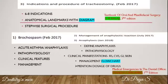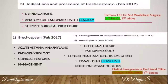All these questions are direct questions from textbooks. The first one is indications and procedure for tracheostomy — there are about six to eight indications. Before explaining the surgical procedure, anatomical landmarks for the tracheostomy incision should be diagrammatically represented, followed by a step-by-step surgical procedure in points. The subheadings for bronchospasm and anaphylaxis remain the same.